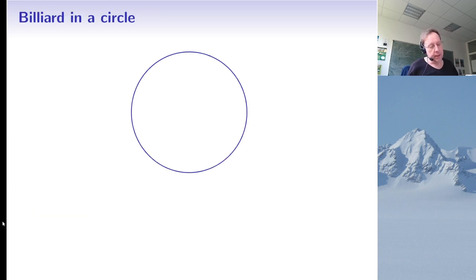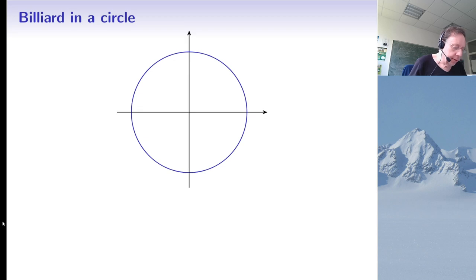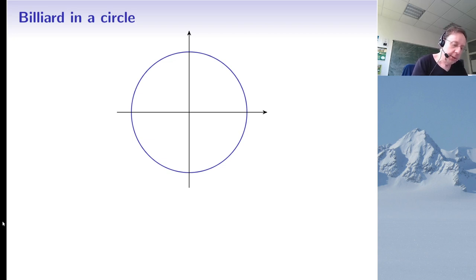Let me start with the simplest example: the billiard in a perfect circle. The circle is so simple that one can compute the whole trajectory using Euclidean geometry alone, but I'm going to use a coordinate system because that will be useful for more complicated shapes. I have a rectangular Cartesian coordinate system, and let's assume the circle has radius one.